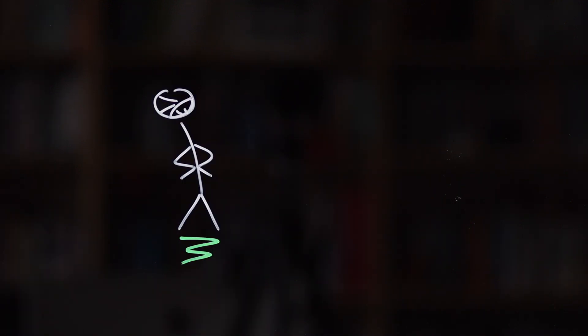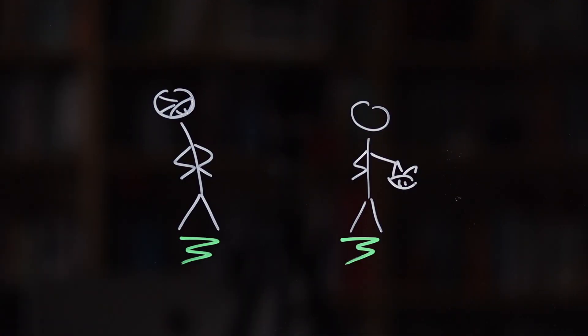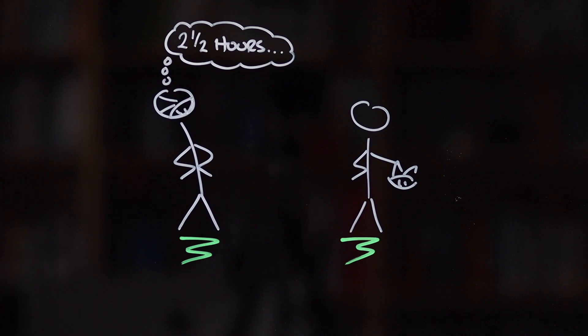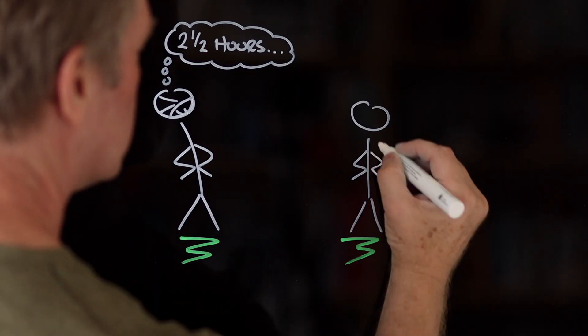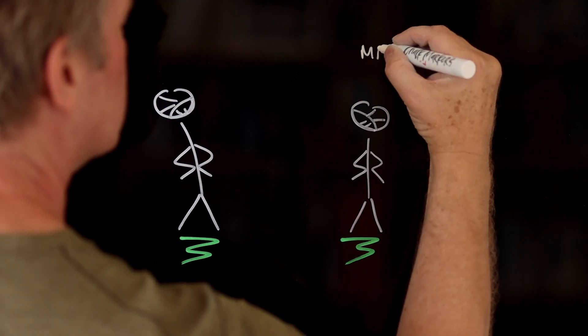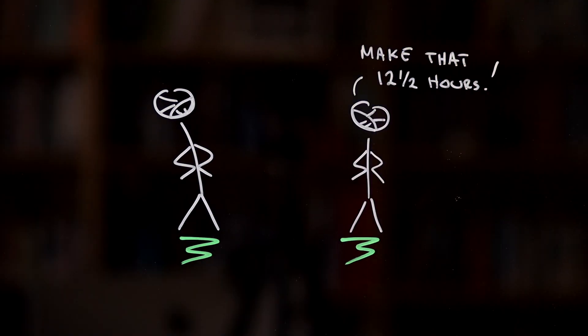Perhaps more usefully here, if you're wearing a fit-tested N95 respirator and the other person's not wearing anything, that CDC-recommended 15-minute window extends to 2 and a half hours. And if the other person is wearing an N95, even one that isn't fit-tested, that goes up to a massive 12 and a half hours.